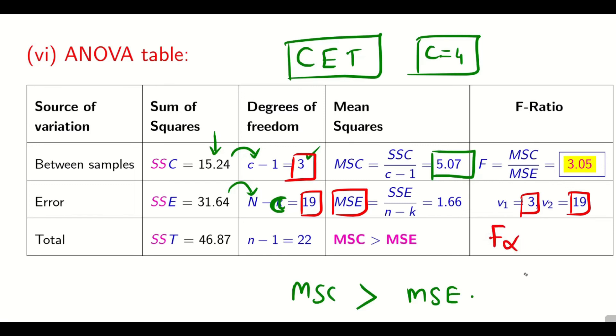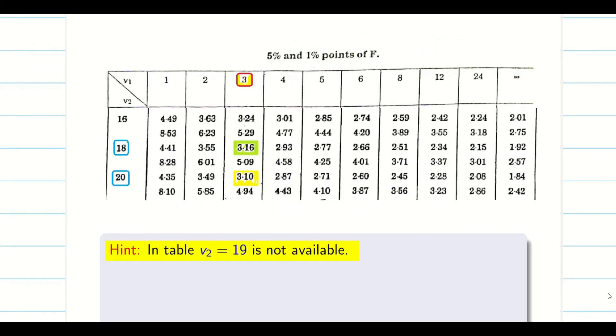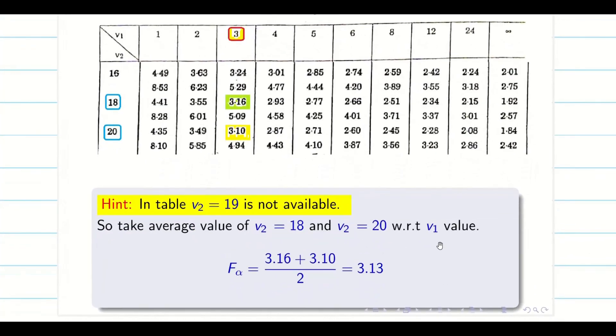Now I want to find F alpha at alpha is 5%. I have to go to the table. Now see the problem is, in the table, I am just cut shorting and giving this view. 16, 18, 20. The table should be from 1, 2, 3, etc. Now the problem is I want 19, but 19 is not available in the table. At 5% level, degree of freedom, first one is 3, this column. Now I want 19. But 18 value at 5% is 3.16, 20 value at 5% is 3.10. So I have to take the average of this 18 and 20, which will give you 3.13. That is going to be my alpha value.